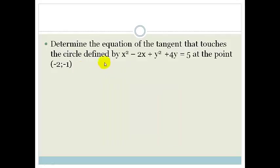Okay, so let's do an example. Right, so let's look at this question. It says, determine the equation of the tangent that passes through the circle defined by x squared minus 2x plus y squared plus 4y equals 5 at the point minus 2 minus 1.